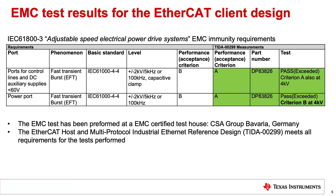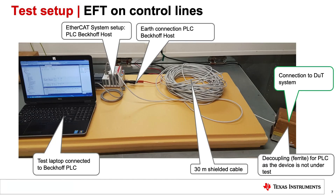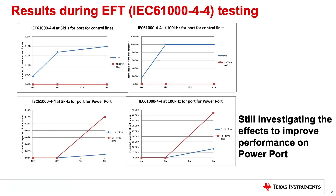The Ethernet PHY has improved ESD performance to more easily conform to the IEC 61000-3-X EMC standards and in general improve system performance, removing effects of noise in the system. To show the EMC performance, a new version of the TIDA-00299 hardware was built showing the DP83826E as an EtherCAT client, and this system was then tested according to the IEC 61000-4-4 fast transient burst standard. The results show excellent performance on the communication lines and good performance on the power port EFT tests.